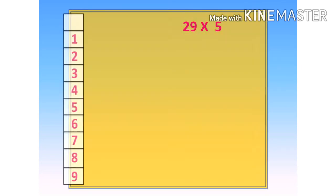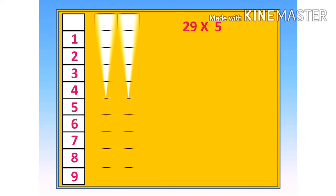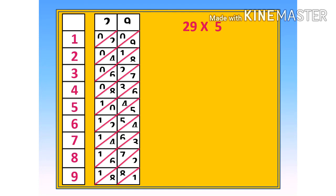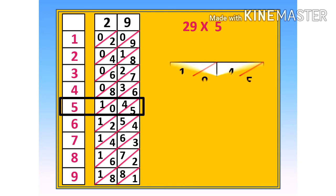Next example, 29 multiplied by 5. Place the rows of 2 and 9 side by side on the board. Sum the numbers along the slanted diagonals using rules applying to the multiplier.